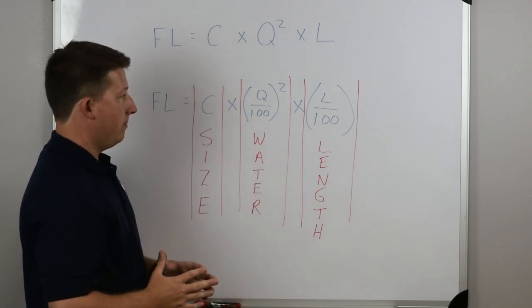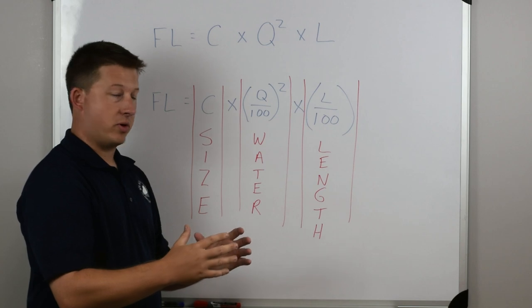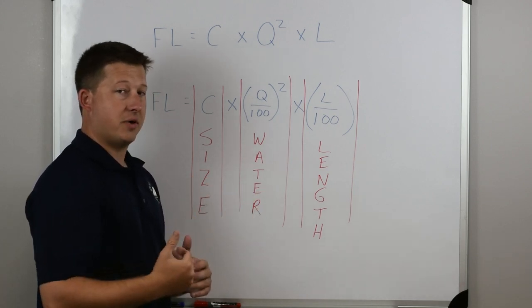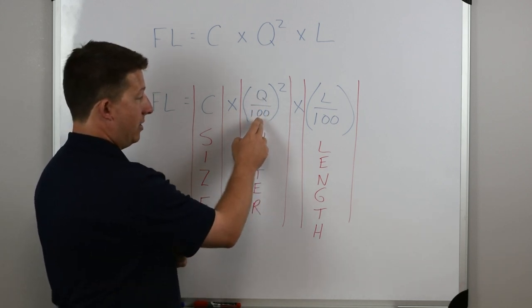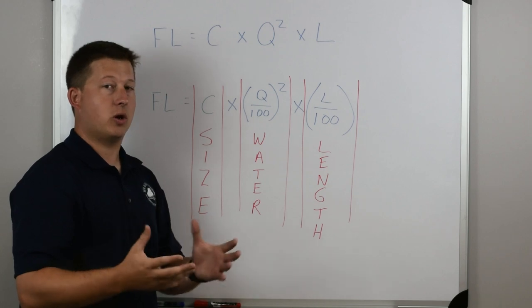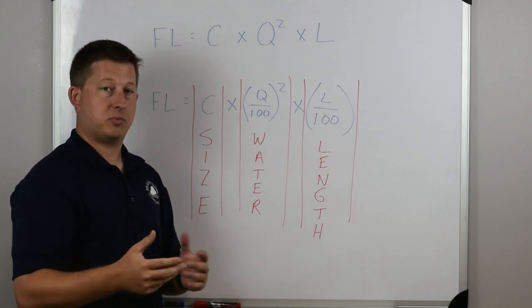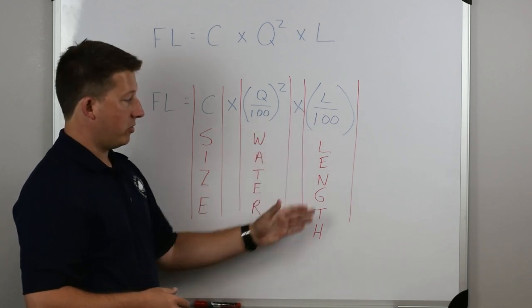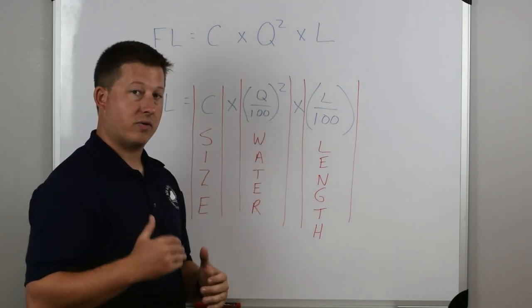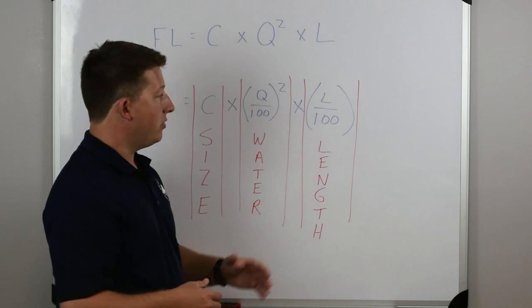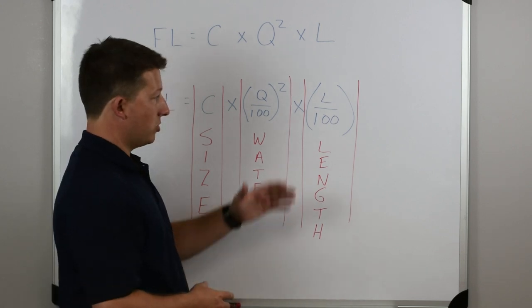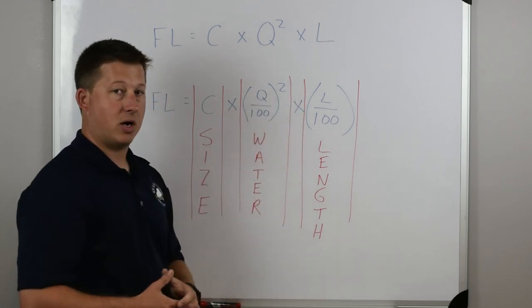It's important that when you rewrite it, you put the square outside the parentheses. If you put the square inside, it means you're squaring Q and then dividing by 100 — but we want to divide Q by 100 first, and then square it. For example, 200 GPM becomes 2 hundreds of gallons per minute, then squared. Lastly, the length of hose is also in hundreds of feet, so we rewrite L as L divided by 100. 200 feet of hose becomes 2; 400 feet becomes 4.